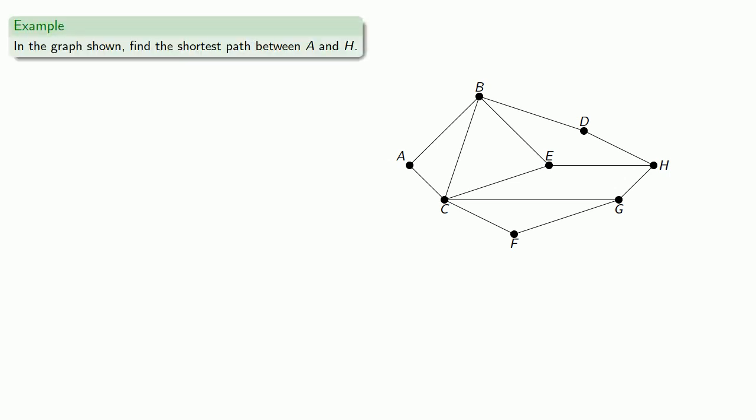So, for example, in the graph shown, let's try to find the shortest path between A and H. And we see that the path A, B, E, H crosses three edges.